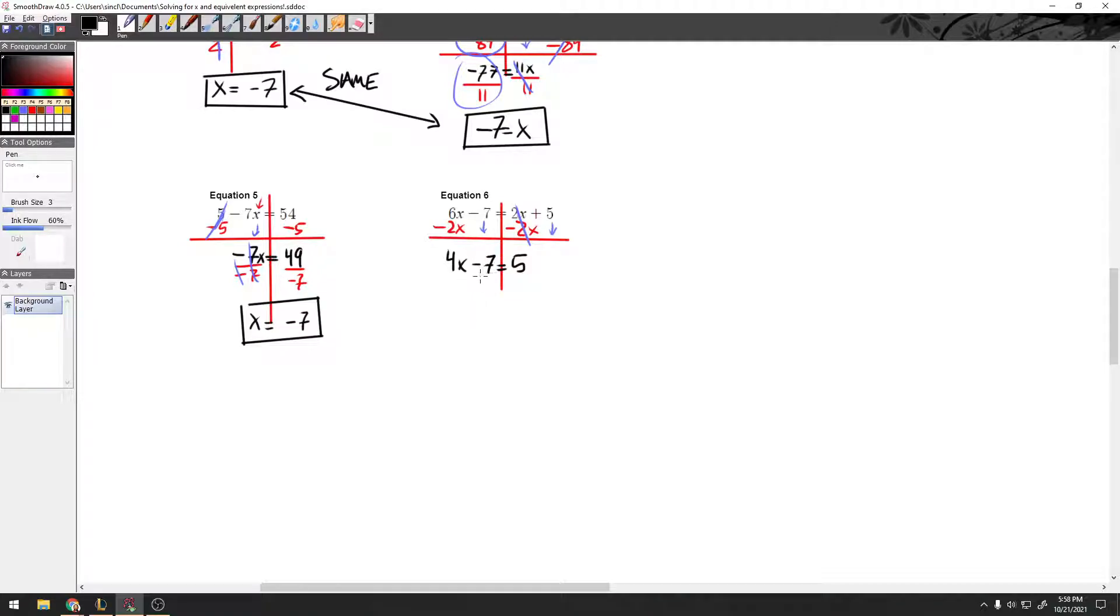And then I just have two more steps. Get rid of this negative 7. Get rid of the 4. To get rid of the negative 7, positive 7 on both sides. Plus 7. Plus 7. This crosses. It comes down. The 4x equals, and I think this one is 12.